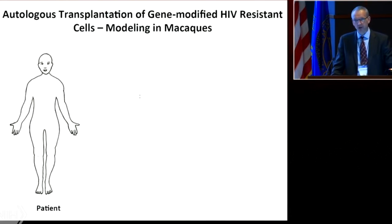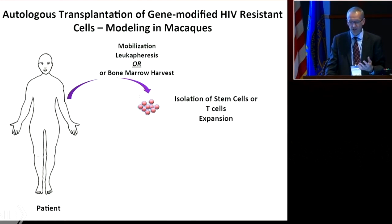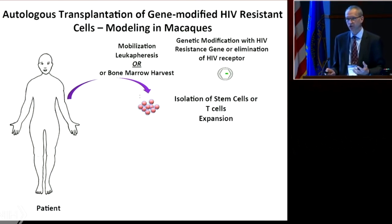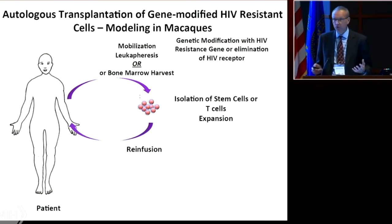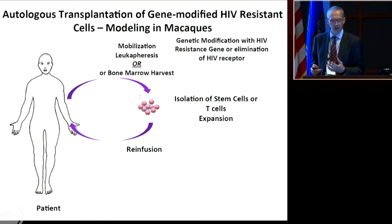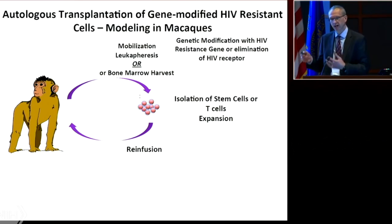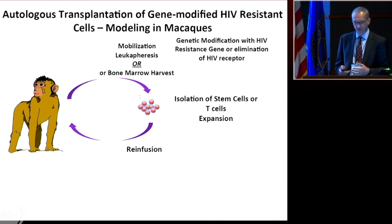If we do an autologous transplant with gene-modified cells in patients, we would take mobilized cells or bone marrow, isolate the stem cells or T cells, and modify them either with lentiviral vectors to express anti-HIV genes or by doing CCR5 disruption. We can then re-infuse these cells and study conditioning regimens to best facilitate engraftment of genetically modified cells. This same transplant process can be modeled very nicely in non-human primates using the same reagents and conditions for in vitro studies.